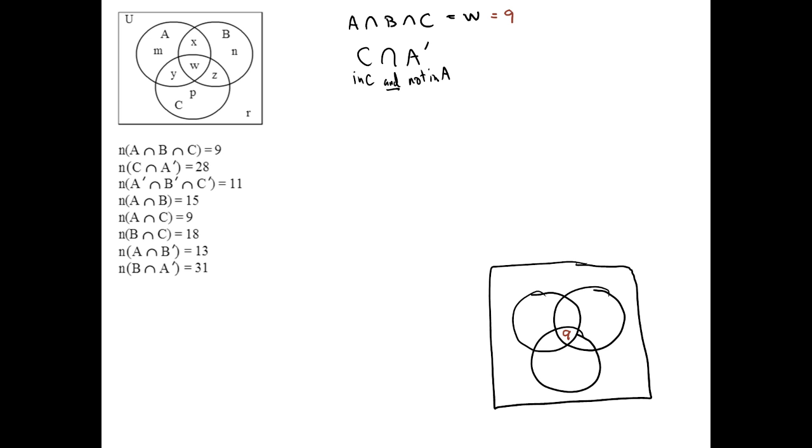If not, what you can do is actually use the region letters here. What are all the guys who are inside of C? They are Y, and W, and Z, and P. What are all the guys that are outside of A? They are N, and Z, and P, and R. Then we're going to intersect these. So by doing it this way, it turns into an easier question where you just have to figure out, by looking at these two sets here, what's in both? What is the overlap? The answer would be Z and P. So I'll write it up here as Z plus P, and that should be equal to 28.